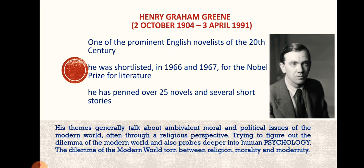About Graham Greene: Henry Graham Greene, 2nd October 1904 to 3rd April 1991. He was one of the prominent English novelists of the 20th century, shortlisted in 1966 and 1967 for the Nobel Prize in Literature. He penned over 25 novels and several short stories, with themes generally addressing ambivalent moral and political issues of the modern world, often through a religious perspective, and probing deeper into human psychology.